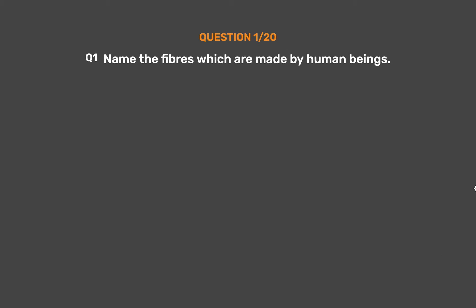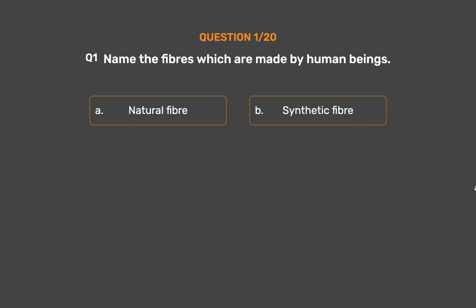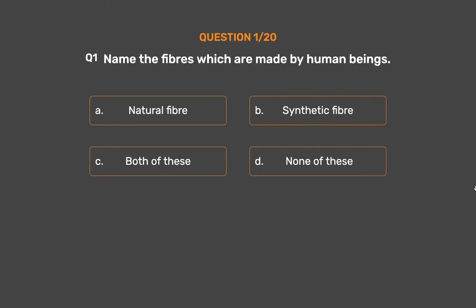Question Number 1. Name the fibers which are made by human beings. Option A: Natural Fiber. Option B: Synthetic Fiber. Option C: Both of these. Option D: None of these.